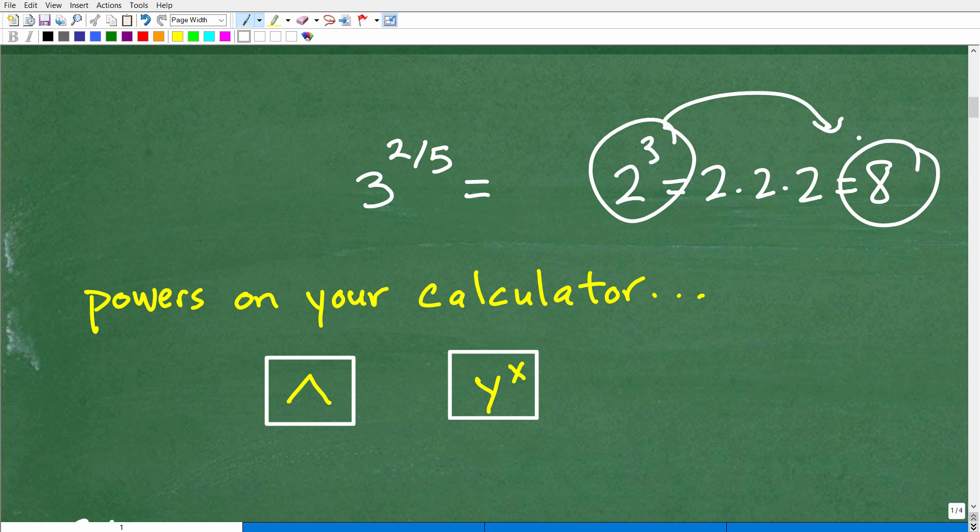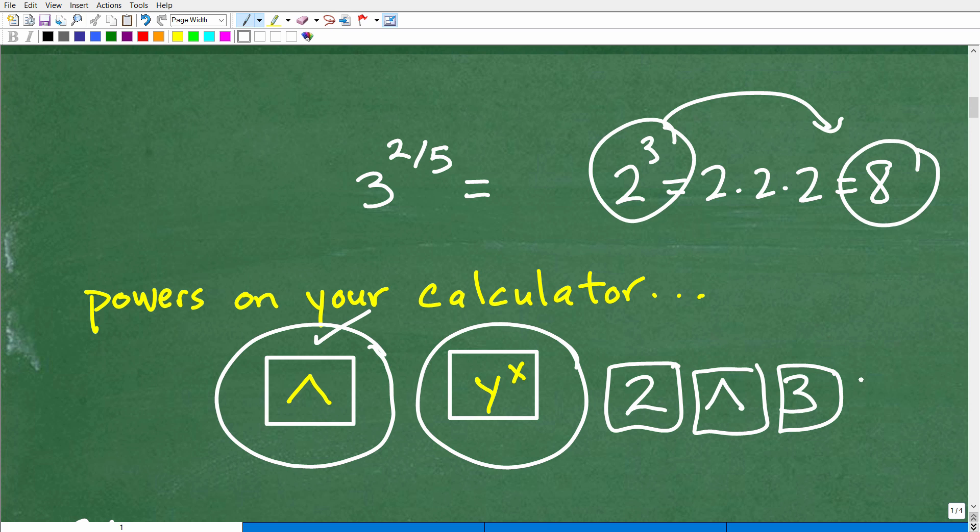What do we need to type into our calculator? Most calculators are going to have one or the other in terms of the buttons you need to use. This is probably the most common - this is called a caret key. And then here we have like y to the x. You'll have some function like this or this on your calculator. Sometimes it's x to the y, but it's going to be one or the other. So let's talk about how to find 2 cubed. You would type in 2, then the caret key, then 3. This means 2 cubed. You hit the enter or equal sign and you'll get 8.